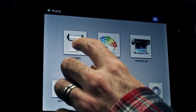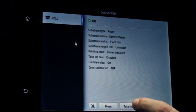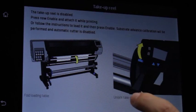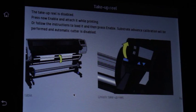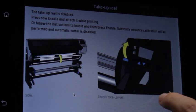At the printer's front panel, select the substrate icon, then select take-up reel. If you need assistance, instructions are displayed on the screen. Slide your finger laterally across the front panel to follow the instructions to the end.